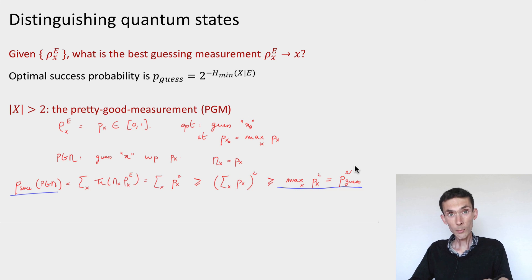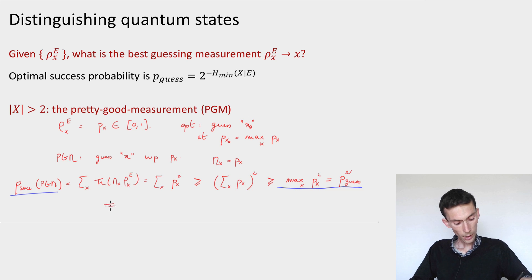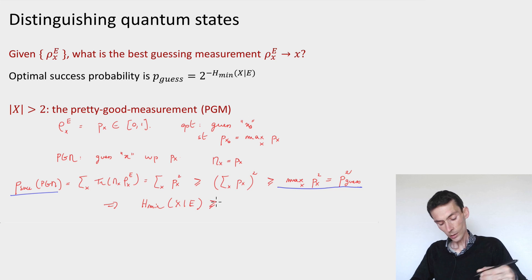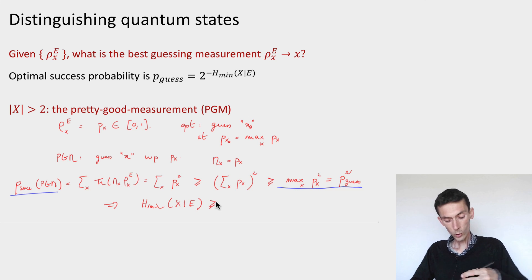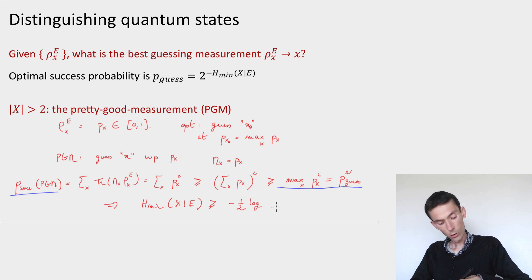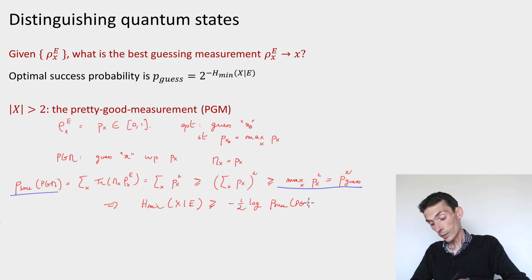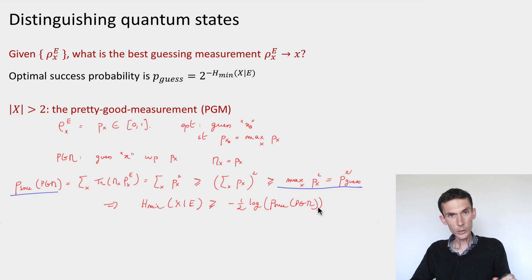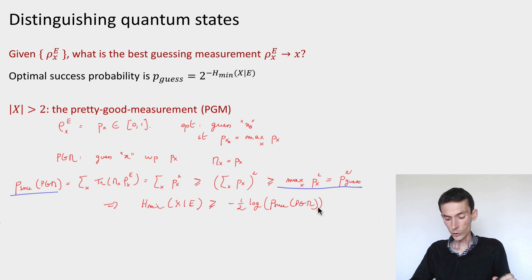So we get an inequality saying that our guessing strategy — outputting a random x distributed according to p_x — has a success probability that is at least the square of the optimal guessing probability. Taking minus logs, this can be rewritten as saying that the min entropy of x given E is at least minus one-half times the log of the success probability of the PGM. So this sum of squares gives us a lower bound on the min entropy that's accurate up to a factor of one-half, which is not bad in general.